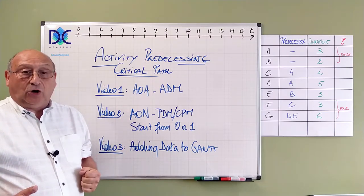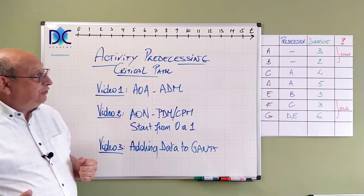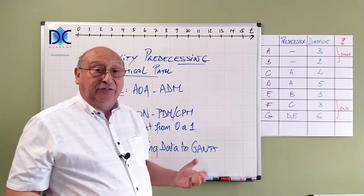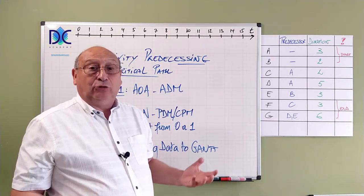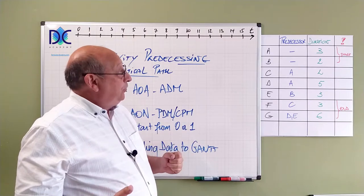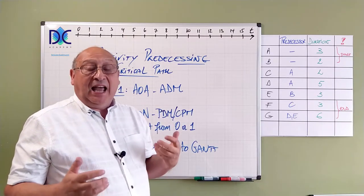We're starting with video one here. Here I'm going to draw the network diagram where I have here the activities from A to G with their predecessors and their duration. What is important to consider here is that activities A and B have no predecessor.